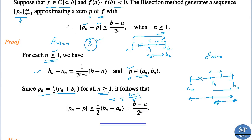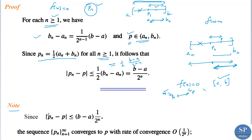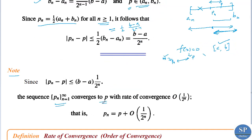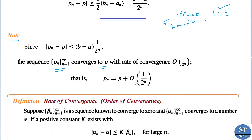This gives us that if we use the bisection method to find the root of f(x) = 0 on interval [a,b], and perform n iterations, then the distance between the actual root p and the approximate root pn satisfies |pn - p| ≤ (b - a) / 2^n. Therefore the sequence pn converges to p with rate of convergence O(1/2^n), that is pn = p + O(1/2^n).